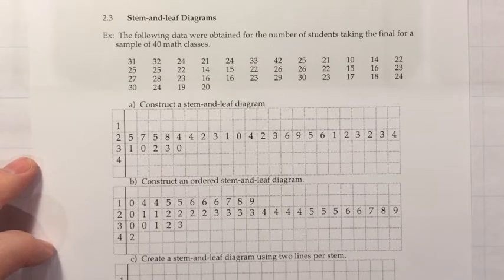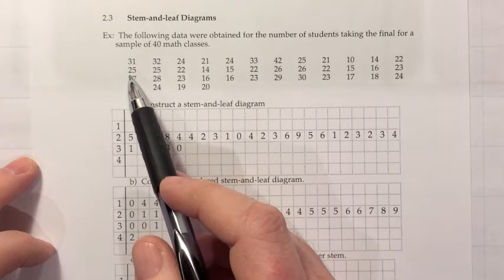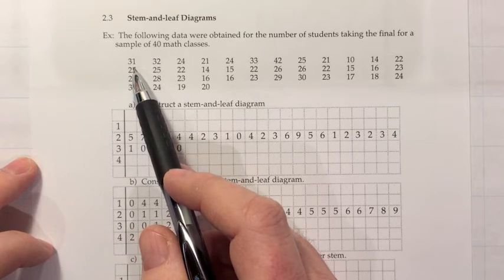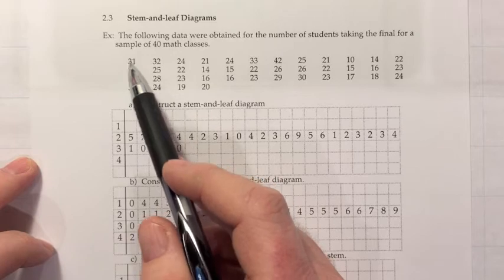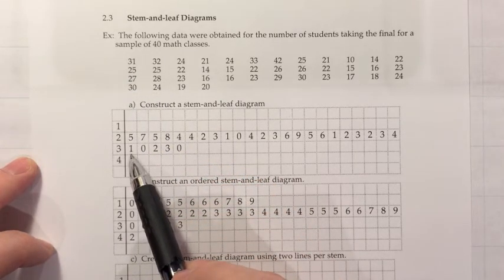So the way that works is we take these two digit numbers and we break them up into two parts, a stem and a leaf. And the tens place will become the stem and the ones place will become the leaf. So for example, that 31 is right here. There's the three and there's the one.